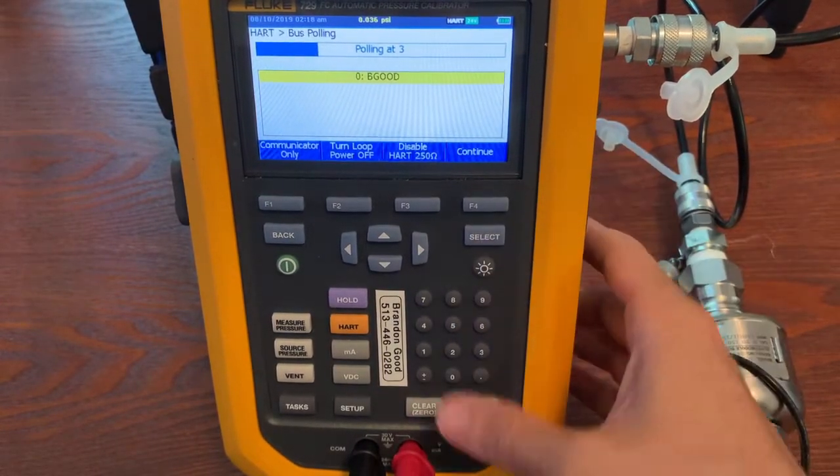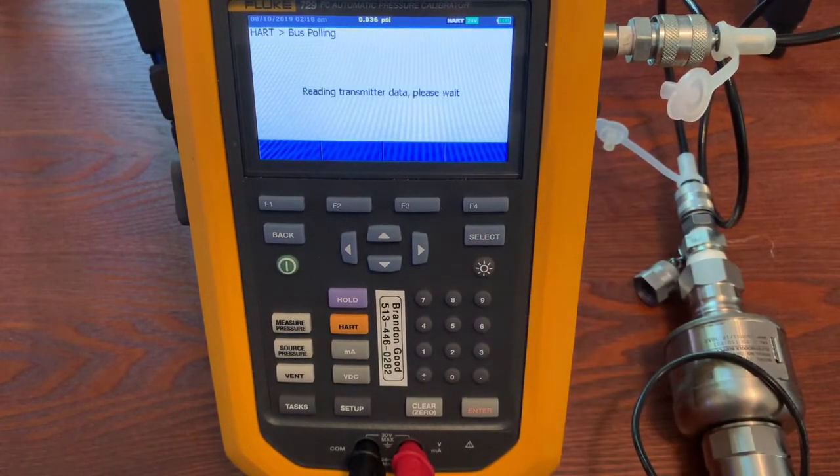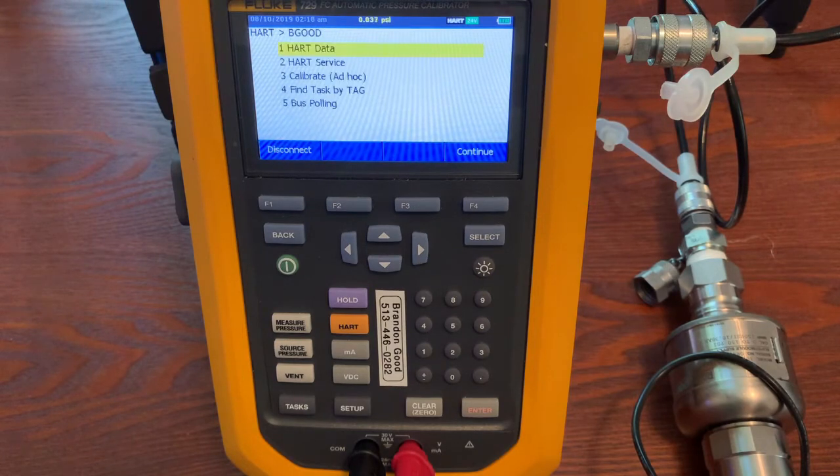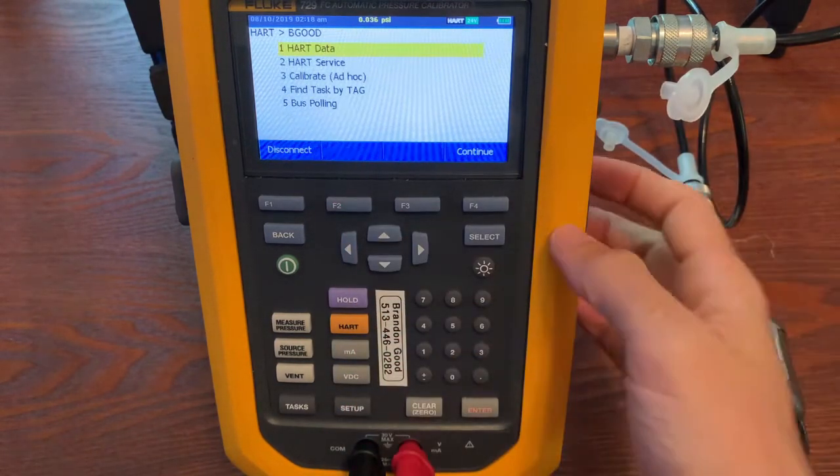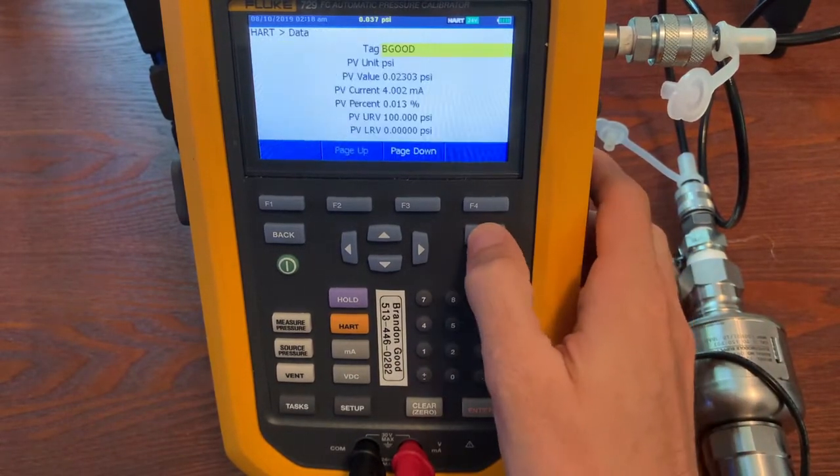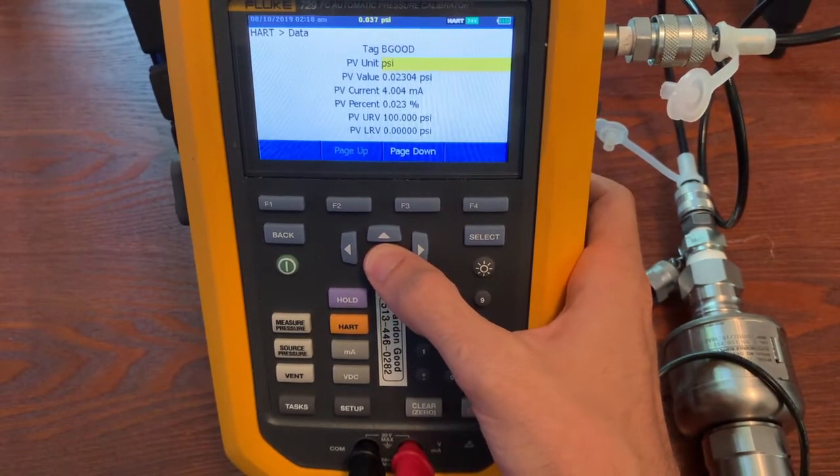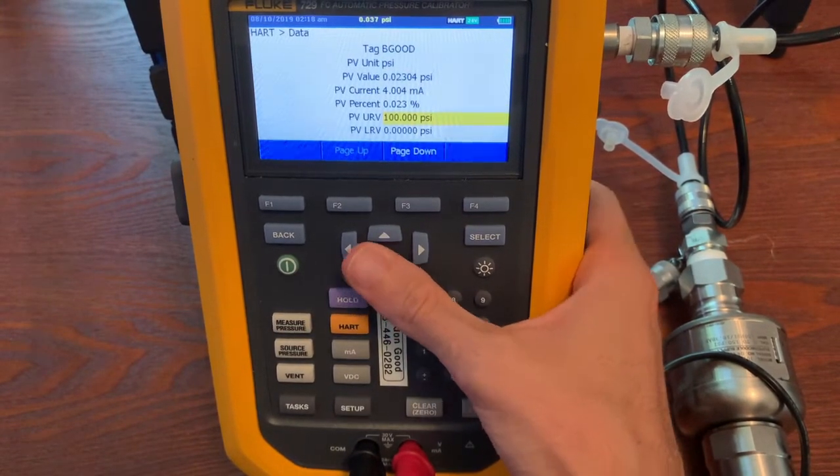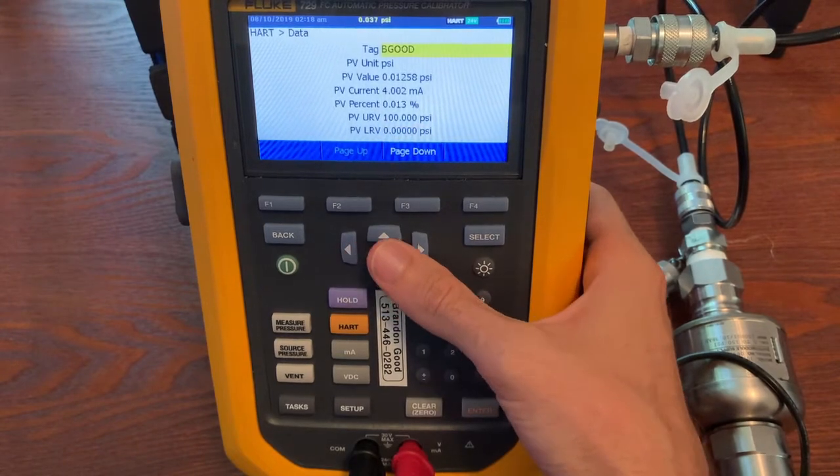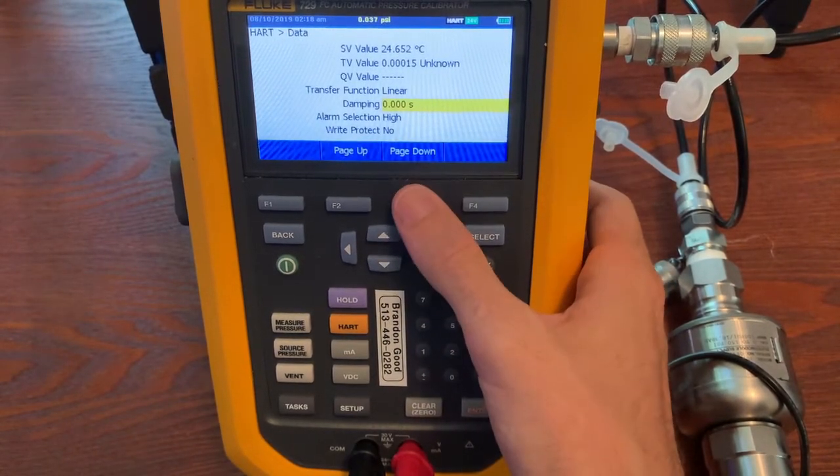You can see now we're reading the transmitter. And now we get to the point that we can see the information that the 729 can see out of the transmitter. So you can see HART data. I'll scroll through this so that you can see it. You guys that do pressure calibrations know more than I know about this stuff. So that's page one. Page two gives you this. Page three gives you that.